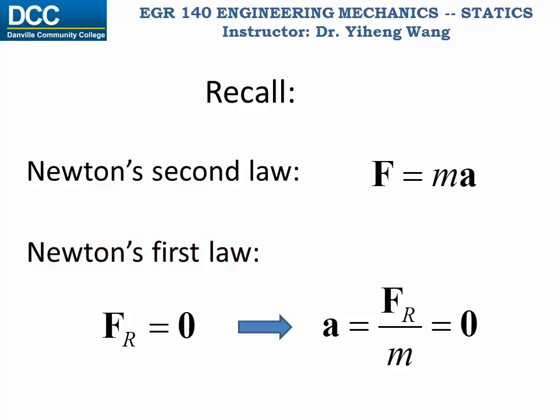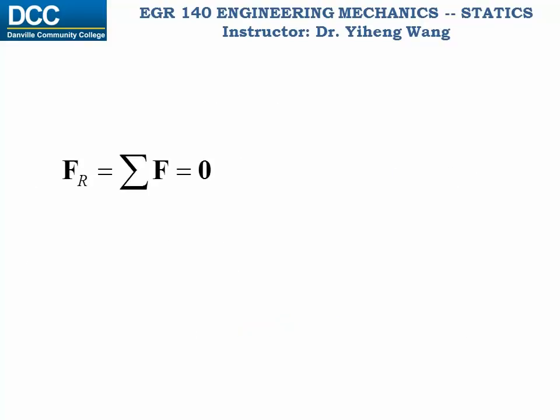Notice that in all these equations, the force F and the acceleration a are in bold letters, indicating that they are vectors. Therefore, the condition for particle equilibrium is simply described by Newton's first law, that the resultant force must be zero.